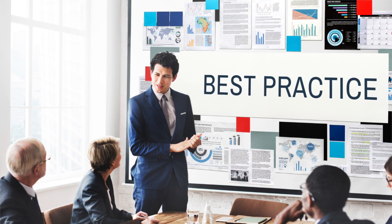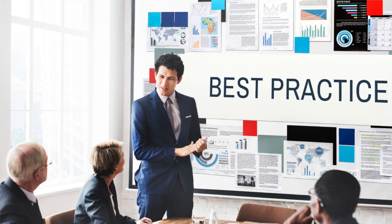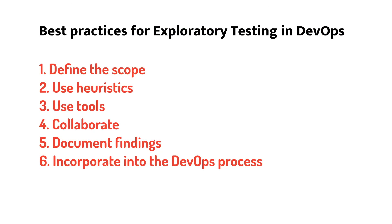Let's understand the best practices of exploratory testing in DevOps. Define the scope: Before starting exploratory testing, it's important to define the scope of the testing. This helps to ensure that the testing is focused and efficient and that testers are able to cover the most important areas of the software. Defining the scope can include defining the features, test scenarios, and expected outcomes. Use heuristics: Exploratory testing often involves testing without a predefined test plan. To ensure that the testing is structured and efficient, testers can use heuristics to guide their testing. Examples of heuristics include equivalence partitioning, boundary value analysis, and decision tables.